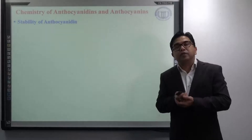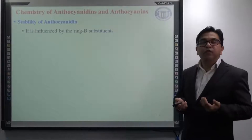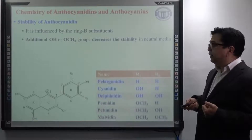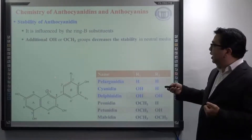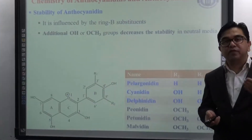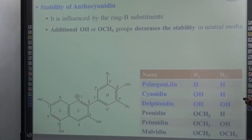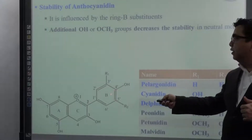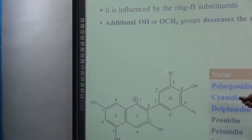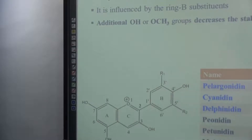The stability of anthocyanidin is also mainly influenced by the substitution pattern on ring B. It has been observed that additional OH or OCH3 groups decrease the stability of the anthocyanidin or aglycone towards neutrality. So, more number of OH groups or methoxy groups on ring B, if present, decreases the colour stability towards neutral pH.